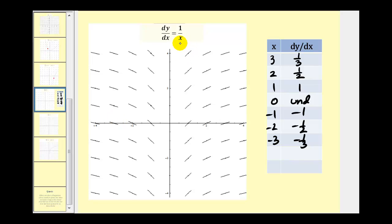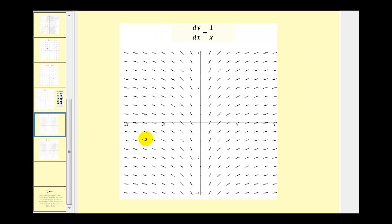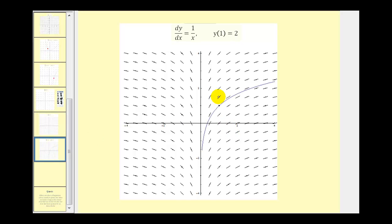This slope field represents the family of solutions to this differential equation. With technology, we can increase the number of segments over this interval. If we're given an initial condition — for example, y of one equals two, meaning the solution contains the point (1, 2) — we can use the slope field to determine the particular solution to the differential equation that satisfies the initial condition.